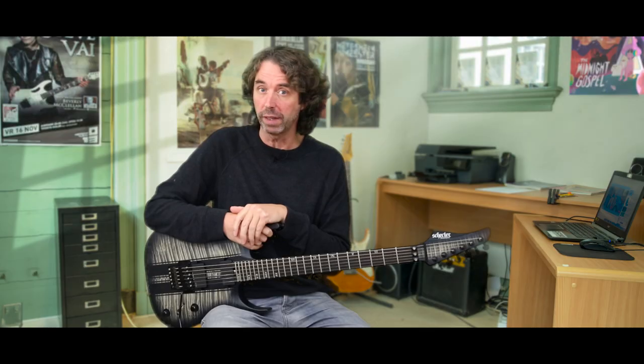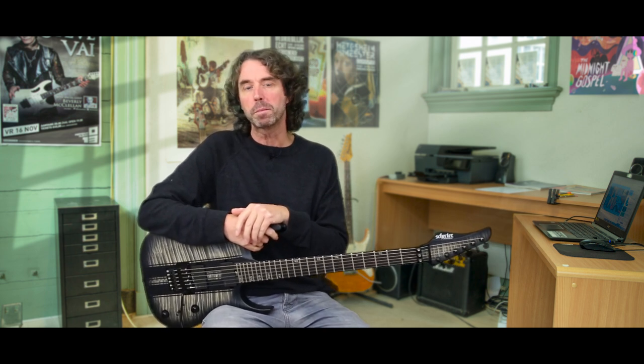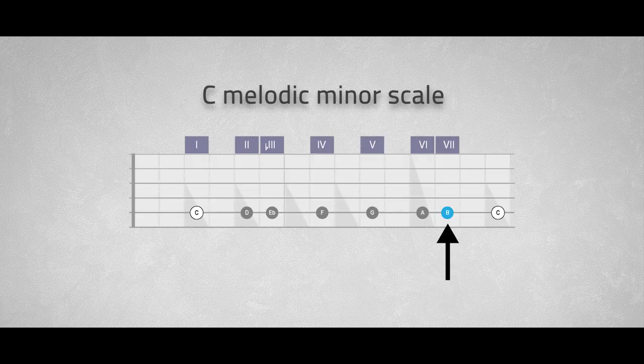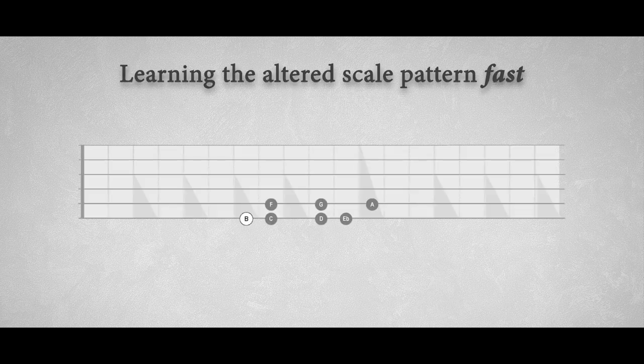Now let's look at some scale patterns on the neck of the guitar. Since the altered scale is extracted from the melodic minor scale, if you already know the melodic minor scale patterns, you're in luck — the only thing to keep in mind is that the tonic is now the major seventh. So if you want to play the B altered scale, just go for the C melodic minor scale and keep in mind that the tonic is B, the major seventh of C melodic minor. For those not familiar with the melodic minor scale patterns, there's a way to learn the scale fast by studying it over one octave, then transposing it over the next octave on the neck. Take a look at this small part of the altered scale pattern which spans exactly an octave — it's easy to learn and remember.